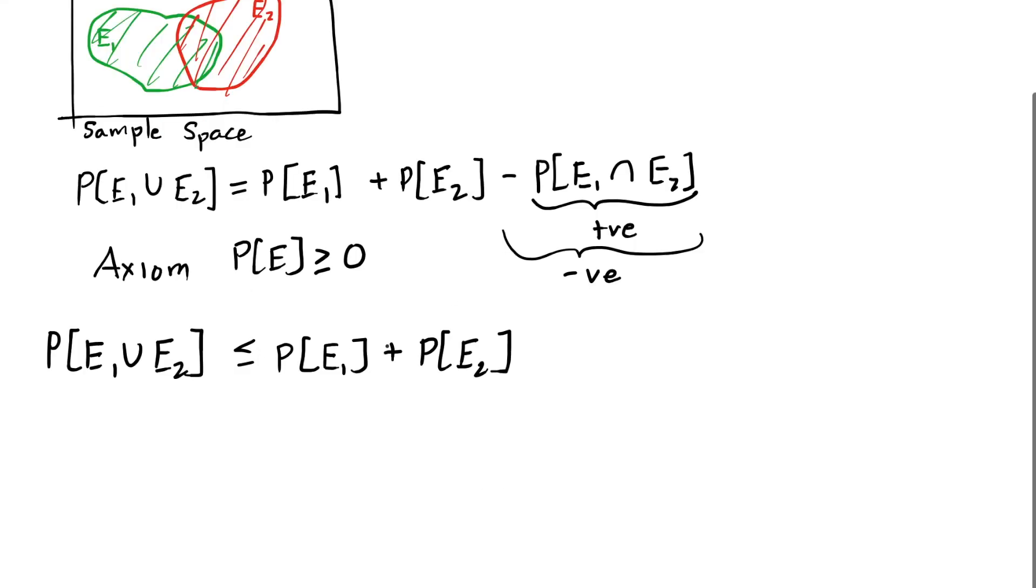The real probability is going to be lower than that by this intersection probability. It might be equal. It will be equal if the two events don't overlap.